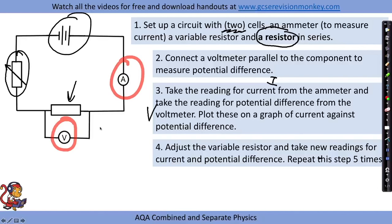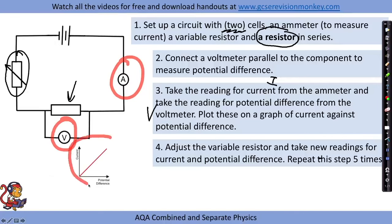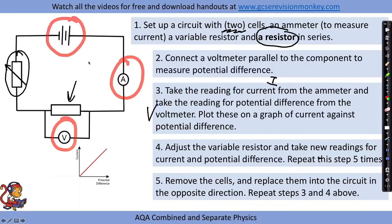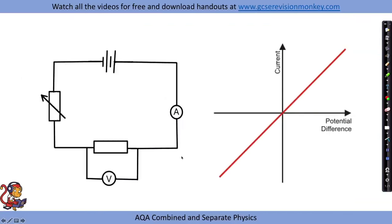Up to this point you'd have drawn the positive region of the graph - current and potential difference plotted with a line of best fit. To get the negative region, remove the cells and replace them in the circuit in the opposite direction, then repeat the steps. This gives negative readings for the voltmeter and ammeter, so you can collect data for the negative region of the graph.